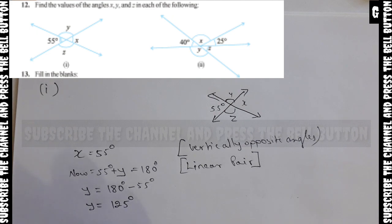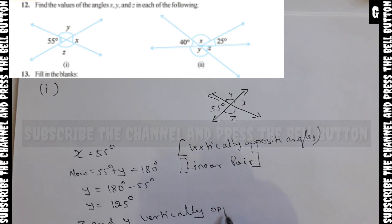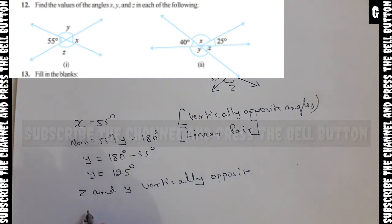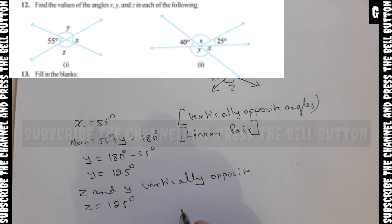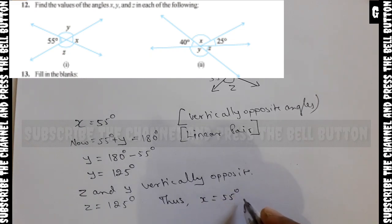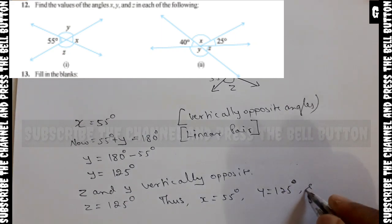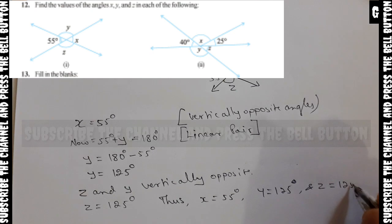z is vertically opposite to y, so z is equal to 125 degrees. Thus x is equal to 55 degrees, y is equal to 125 degrees, and z is equal to 125 degrees. This is the answer.